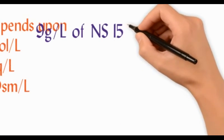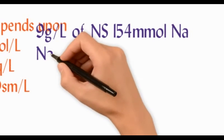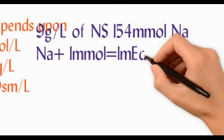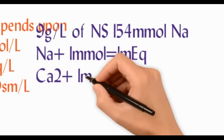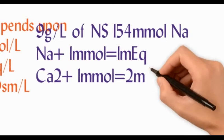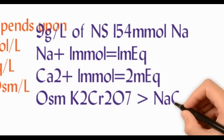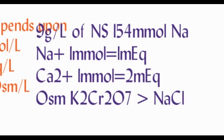For example, a liter of normal saline has 9 grams of sodium chloride dissolved in it. Therefore, it has 154 millimoles of sodium and 154 millimoles of chloride. Since the valency of sodium and chloride is one, it also has 154 milliequivalents of sodium and chloride.